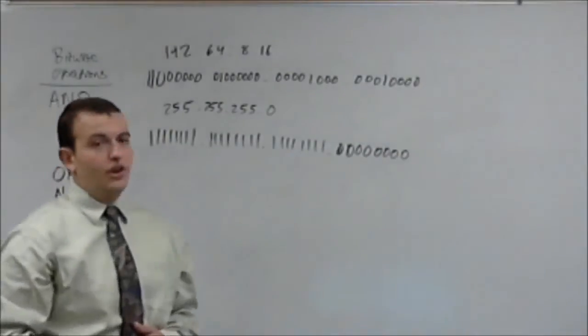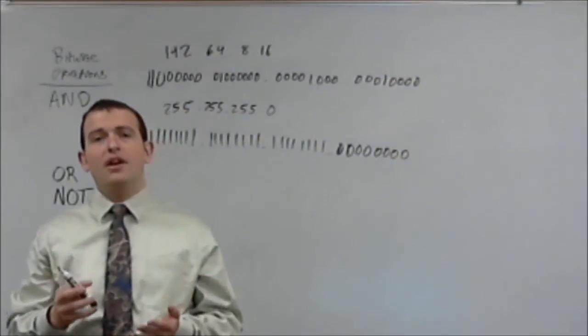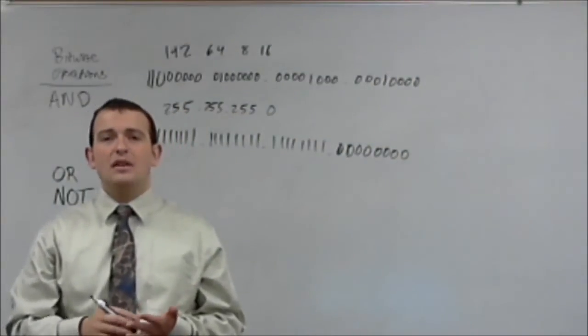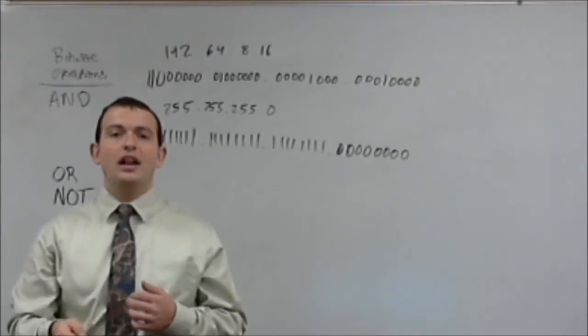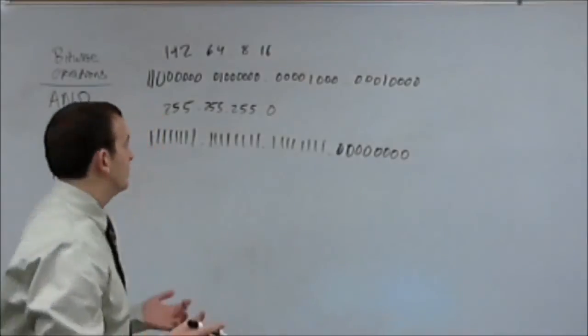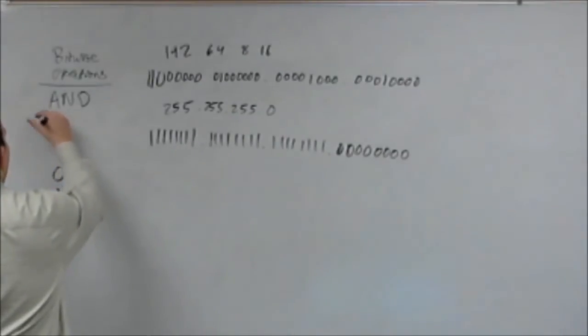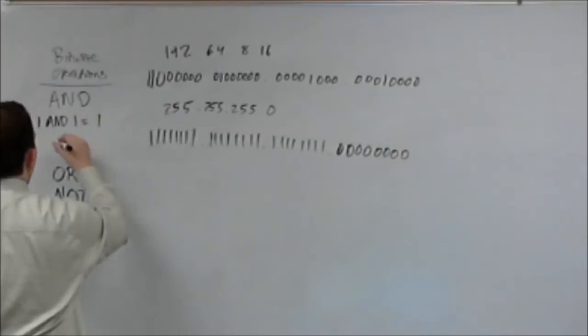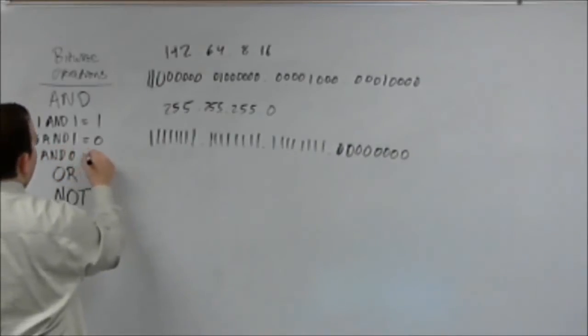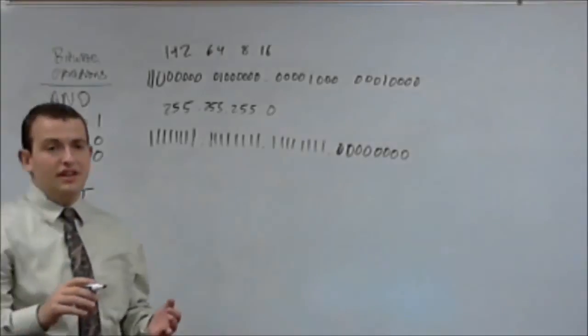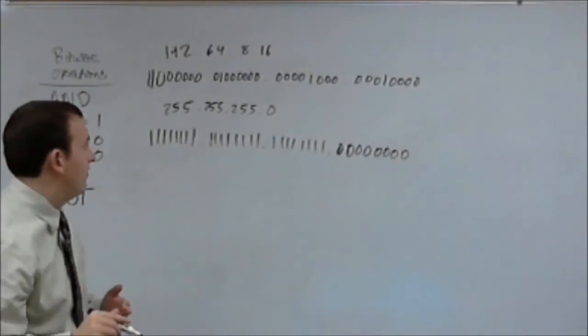Okay, so AND is going to compare two bits together, and if they equal the same thing, it's going to return that value, the on or the off. If they do not equal, it will always equal off. So, for instance, one and one equals one. Or, zero and one equals zero. Or, zero and zero equals zero. Because, remember, the default, if they don't match up, is off.